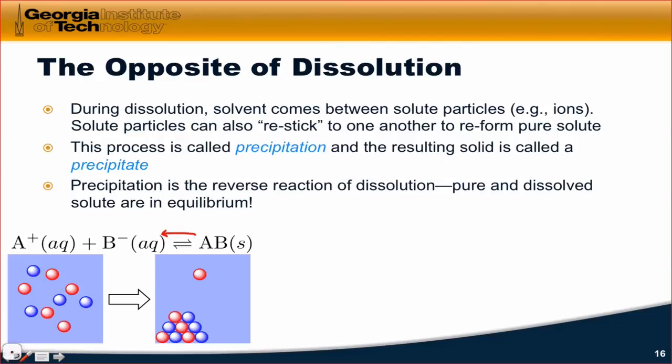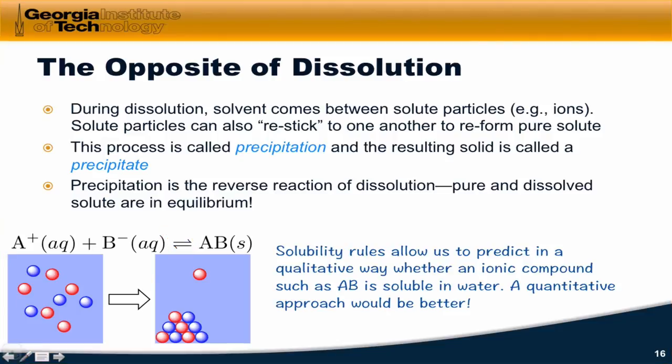What this means is that precipitation and dissolution are in equilibrium and we can apply the tools of equilibrium that we've learned so far to think about precipitation and dissolution. In particular, if you've learned about the solubility rules, you know that we can use them to predict in a qualitative way whether an ionic compound such as AB is soluble in water or not. But I actually want to put this soluble in quotation marks because something that the theory of chemical equilibrium tells us is that at equilibrium, there's always some amount of dissolved solute, even for solutes that are quote-unquote insoluble. If we want to understand solubility in more detail, we have to move past the qualitative understanding to a quantitative understanding that's based on equilibrium principles.